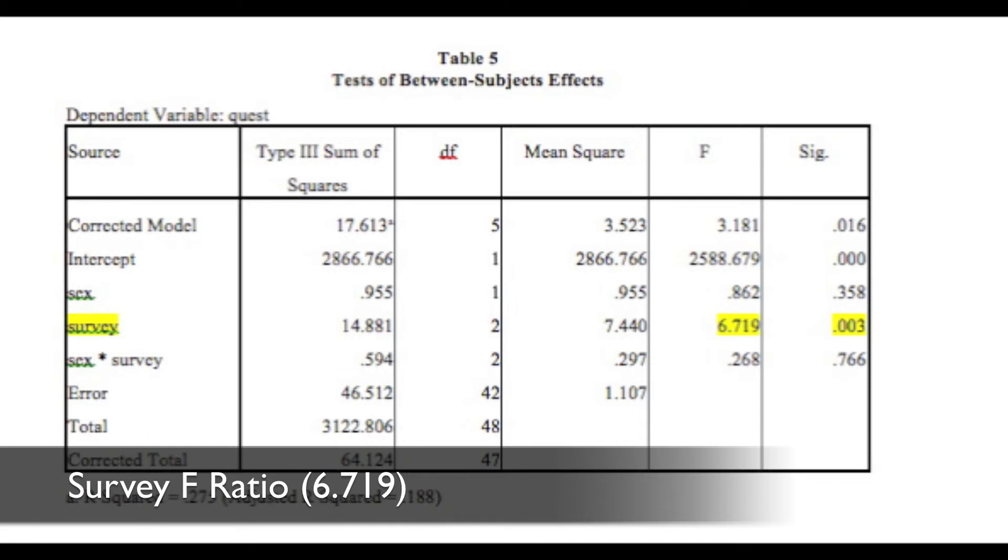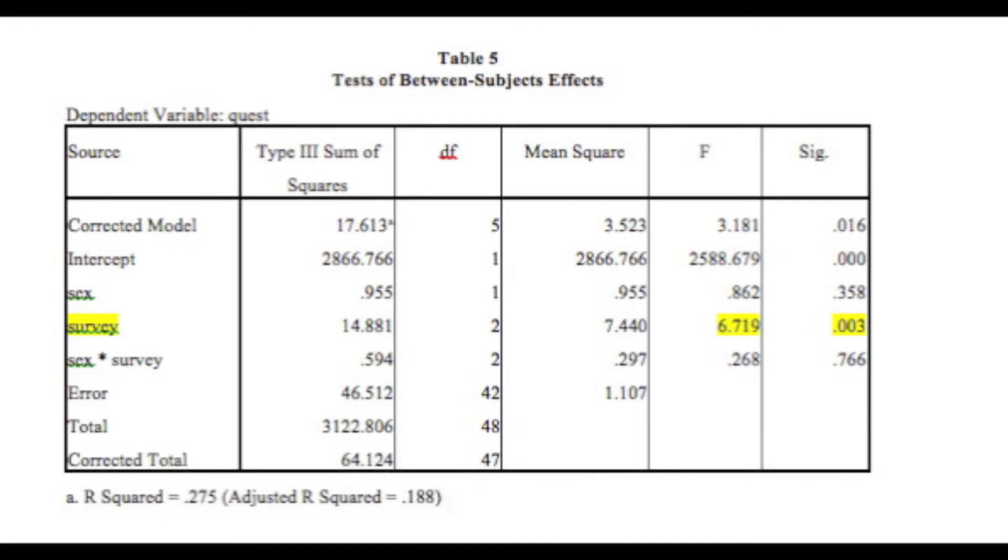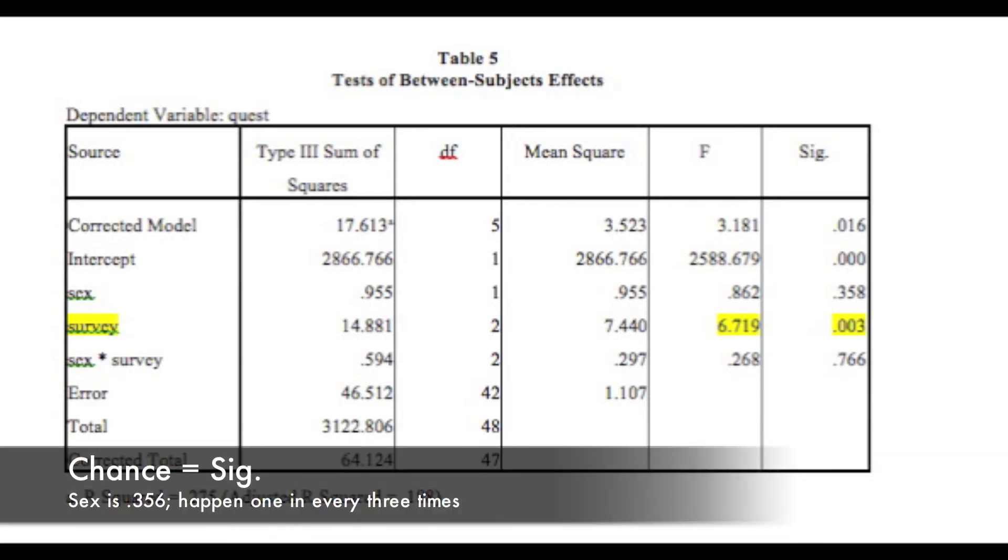However, when I tested for gender, the F-ratio was only .862, which is less than 1. Therefore the survey shows that there is a significant difference between the study groups, but gender does not have an effect on the results. Gender is just by chance. The results will happen one third of the time. However, the difference between the study groups is greater than chance, for the results will happen three in every thousand.